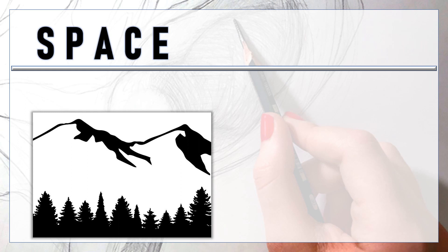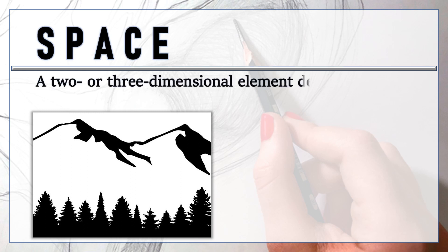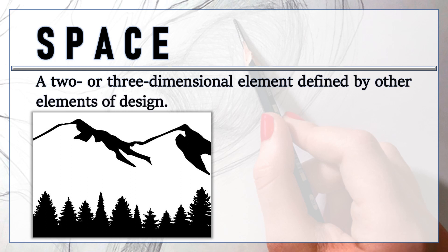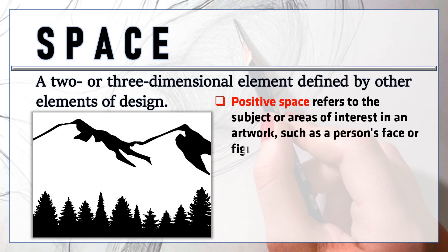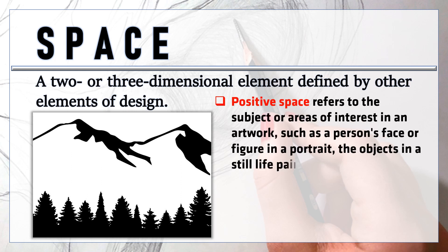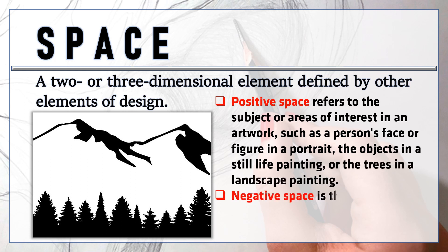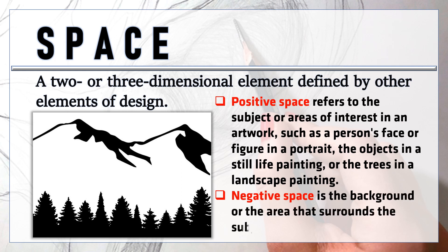Another element is space — a two- or three-dimensional element defined by other elements of design. Positive space refers to the subject or areas of interest in an artwork, such as a person's face in a portrait, the objects in a still-life painting, or the trees in a landscape painting. Negative space is the background or the area that surrounds the subject of the work.